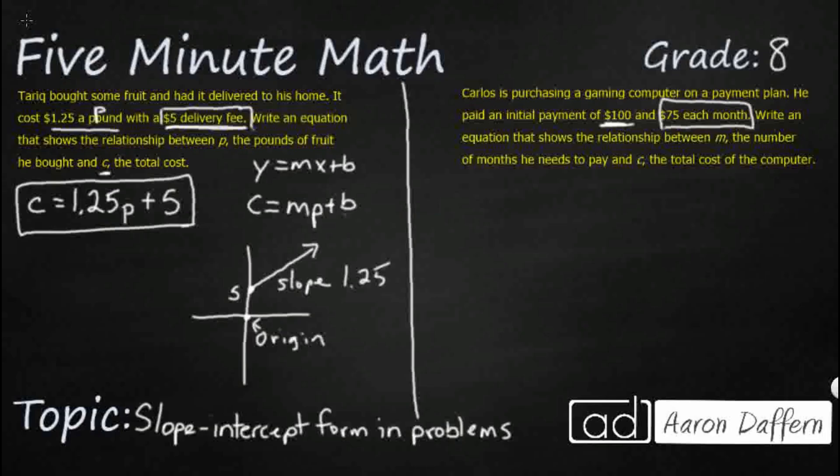So we need to write an equation that shows the relationship between M, the number of months right here and c the total cost. So Y equals MX plus B. But in this case, our Y is going to be our total cost. And then our X is going to be the total of months. So that's kind of confusing, right? It would look like this MM. Remember this M is just the slope plus this B.